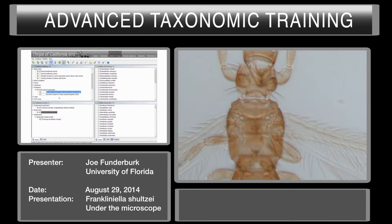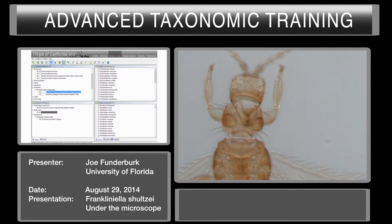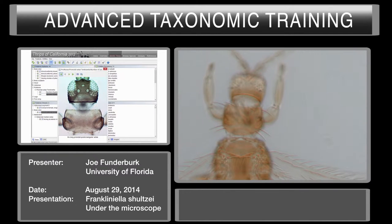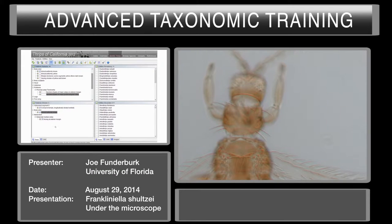Now I go to the next best character and it's going to say pronotal CD terebrantia. Obviously we have terebrantia here — we can see the serrated ovipositor. It's pretty obvious even under this low magnification. You can see we have two major CD, posterior angular CD. Suppose we didn't know what posterior angular CD were — we could go over to the key and click on the box next to it, and it would say no long posterior angular CD, giving us an image. Quite obviously these CD are long and there's two pairs of them.